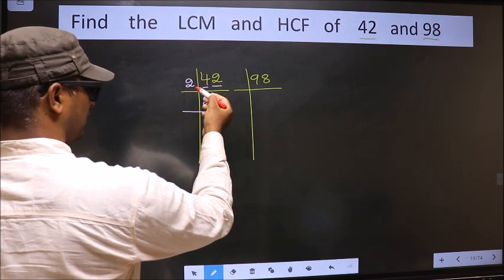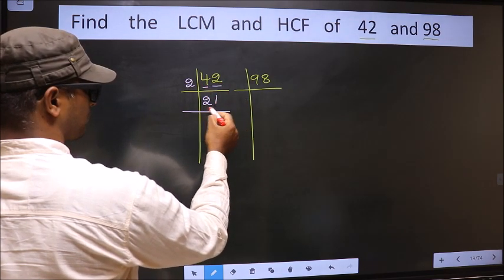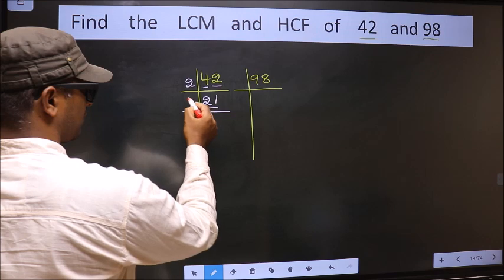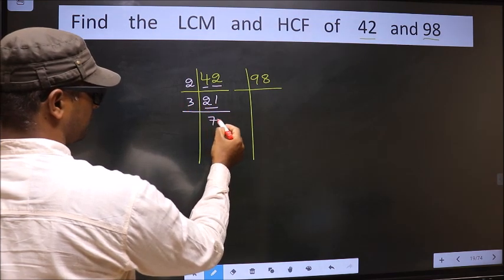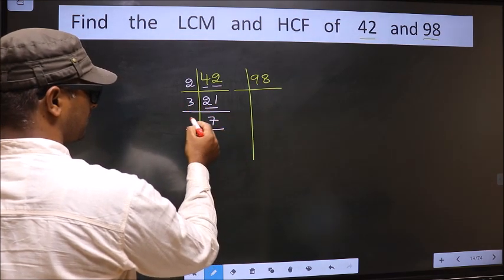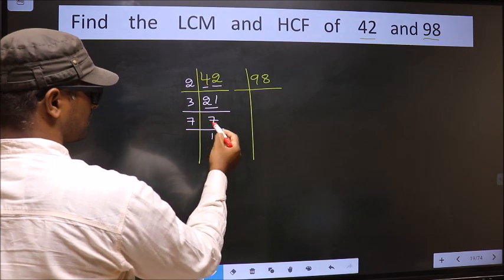The other number 2, when do we get 2 in 2 table? 2 times 1 is 2. Now here we have 21. 21 is 3 times 7 is 21. Now 7, 7 is a prime number, so 7 times 1 is 7.